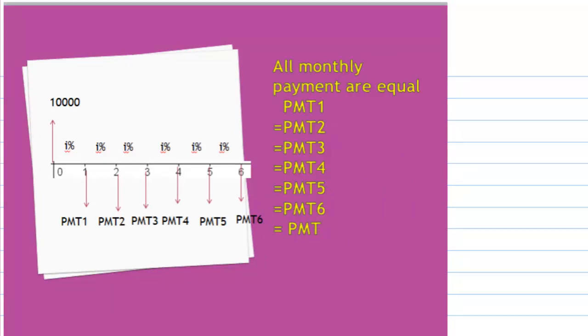We assume all monthly payments are equal. That means PMT1 equals PMT2 all the way to PMT6. Let's call this PMT.